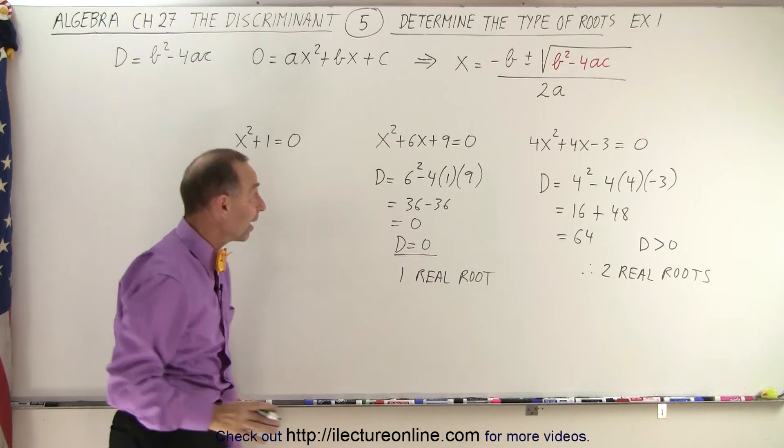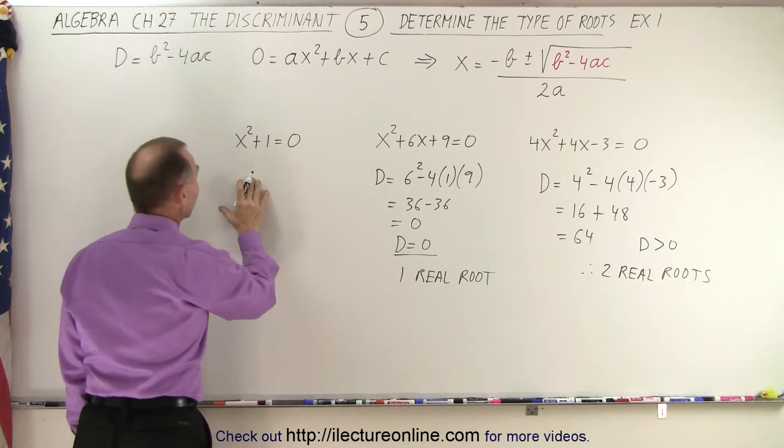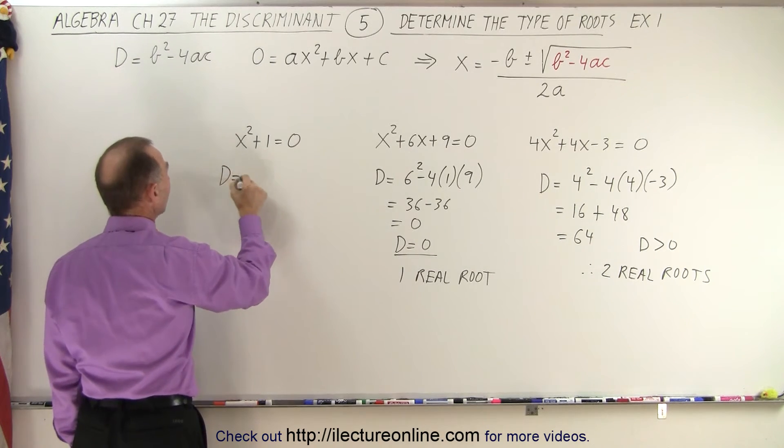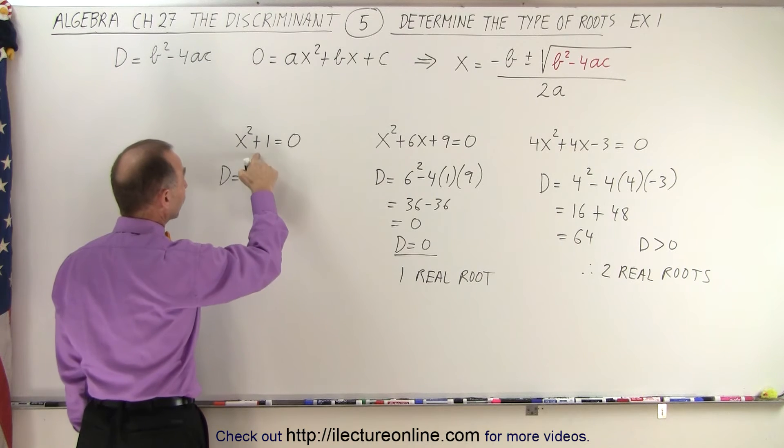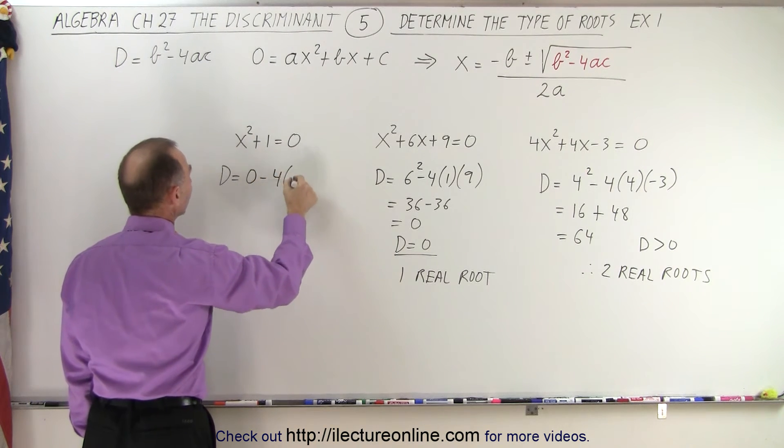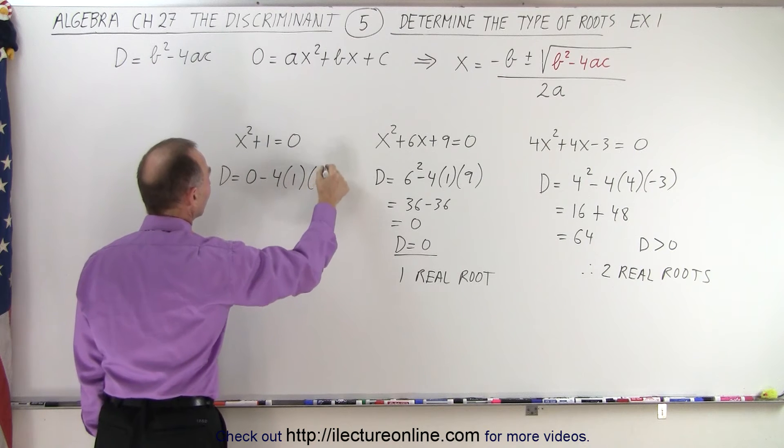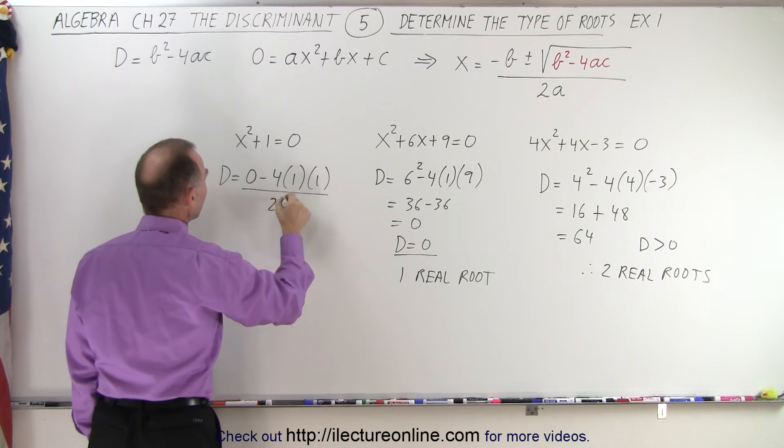In our third example, here again, we could get D is equal to b squared minus 4ac, but there's no b here, so that's 0, minus 4, times a, times c, which is 1, all divided by 2a.